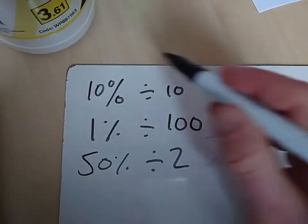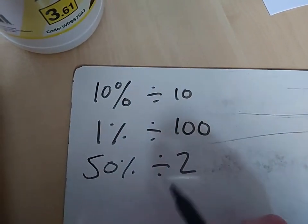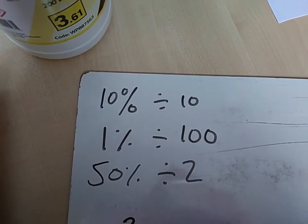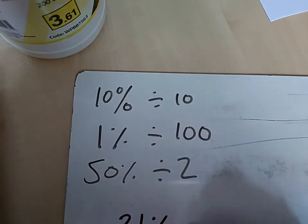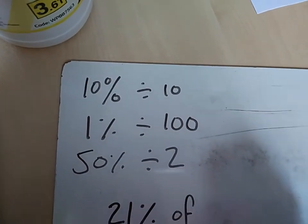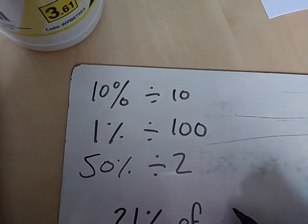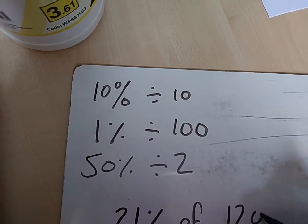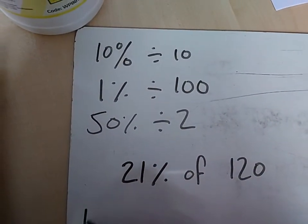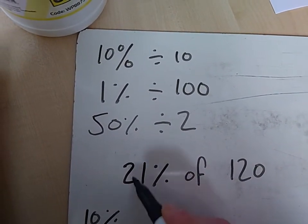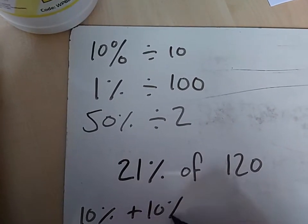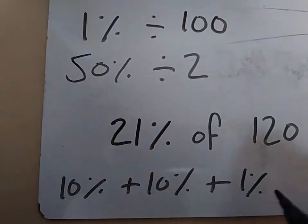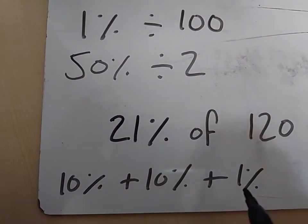Now, if you use these in combination, you can find out what the percentage of any number is. So, for example, if I wanted to find 21% of, let's choose a good number, 120. Well, I think that that's going to be 10% plus another 10% plus 1%. 10% plus 10% plus 1% is the same as 21%. 10, 10, 1, 21.